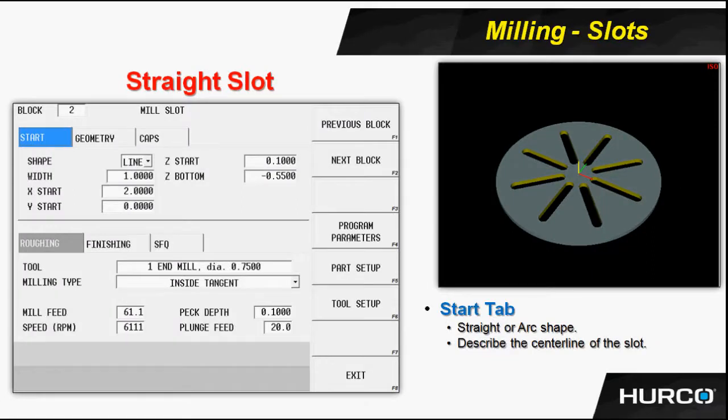There's a block created called slots. This block is specifically for straight and arc shaped slots. When we describe the information necessary to create this slot, we're actually just describing the center of the slot. We're creating the slot at the 3 o'clock position on the picture indicated on the slide. You're then going to use a pattern loop rotate to rotate that feature around the center point to create the other 7 necessary slots for this part.